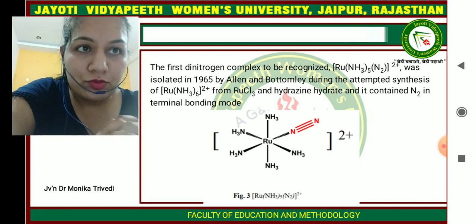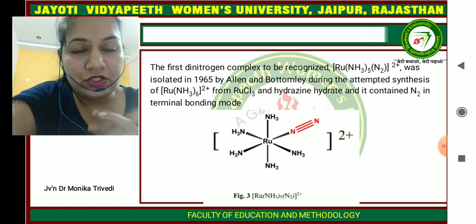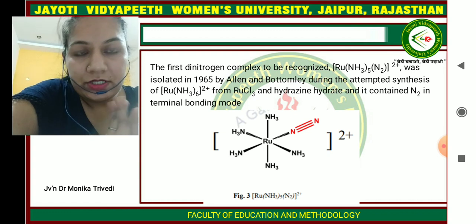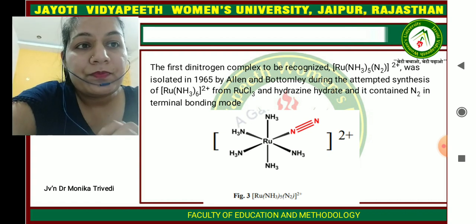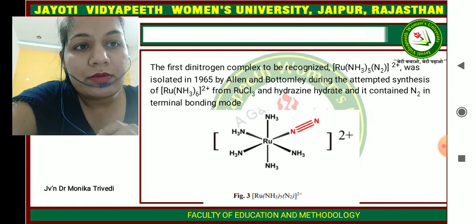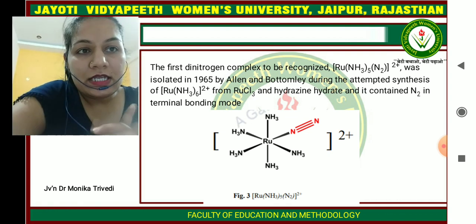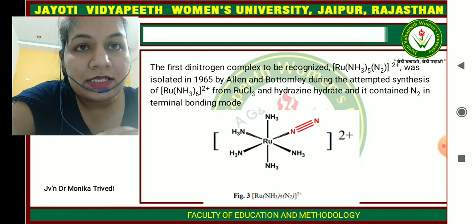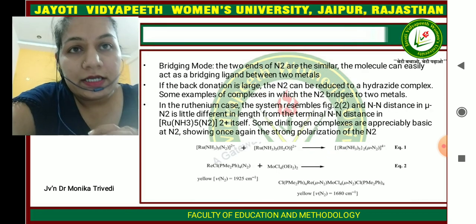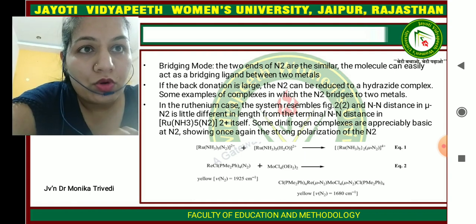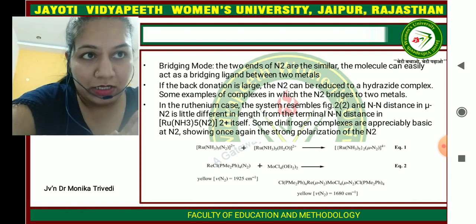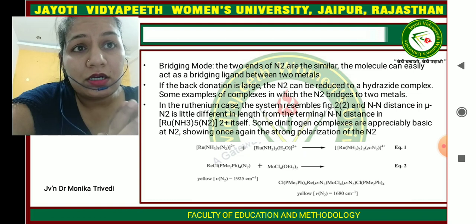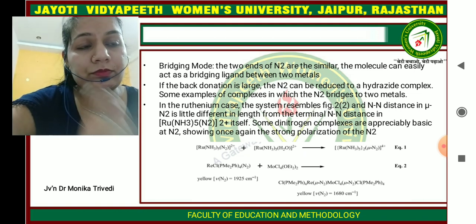The first dinitrogen complex to be recognized is [Ru(NH3)5(N2)]2+. It was isolated in 1965. You can see the structure of ruthenium pentaammine dinitrogen: the N2 ligand is bonded to the ruthenium metal in the terminal mode. In the bridging mode, the two ends of the nitrogen molecule allow it to easily act as a bridging ligand between two metals if the backdonation is larger than for N2 alone.